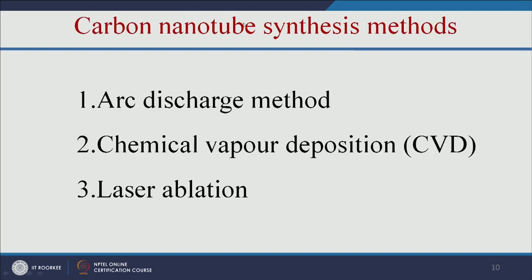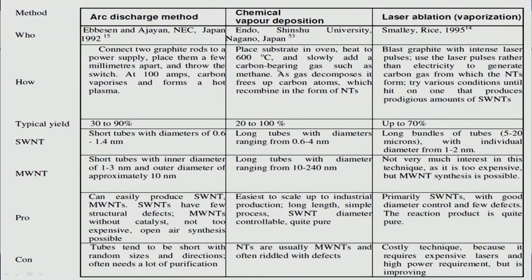Let us see how to synthesize carbon nanotubes. There are three approaches available: arc discharge, chemical vapor deposition, and laser ablation. Let us see how each of these methods is used to make carbon nanotubes.